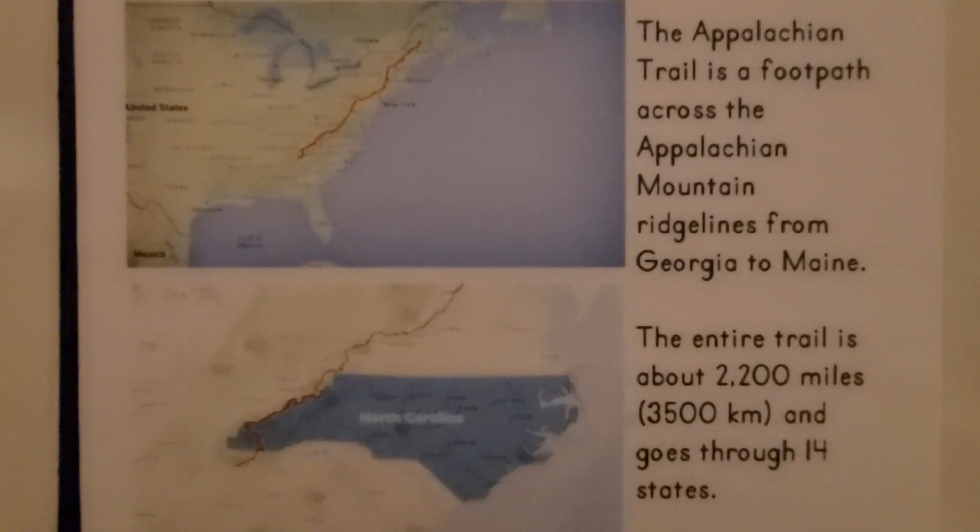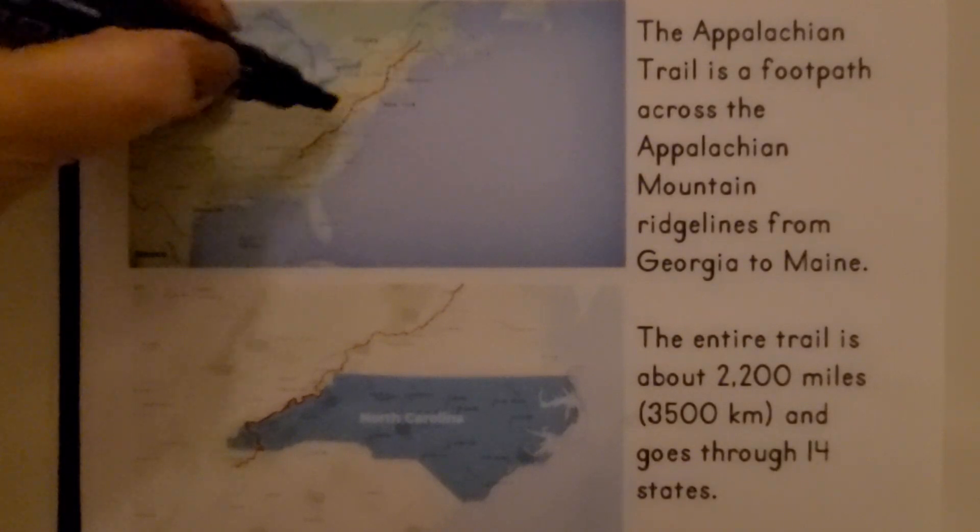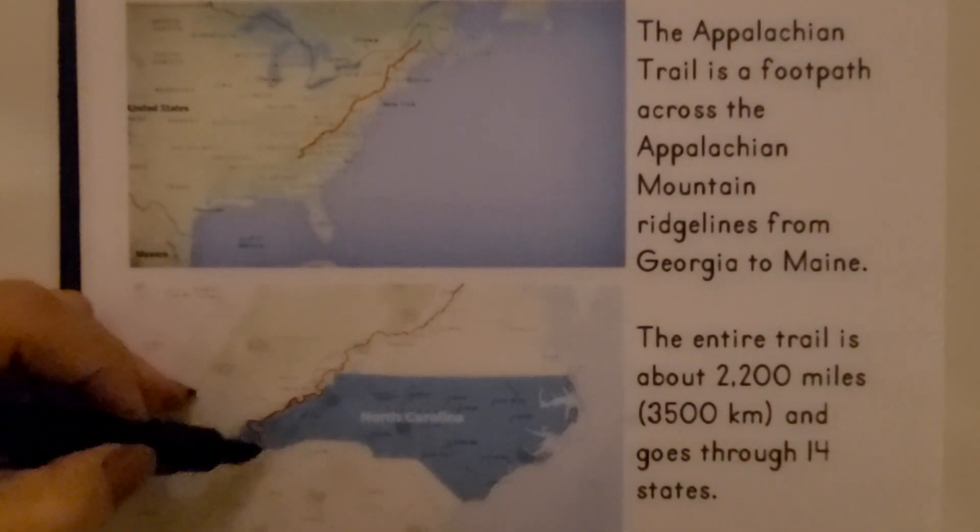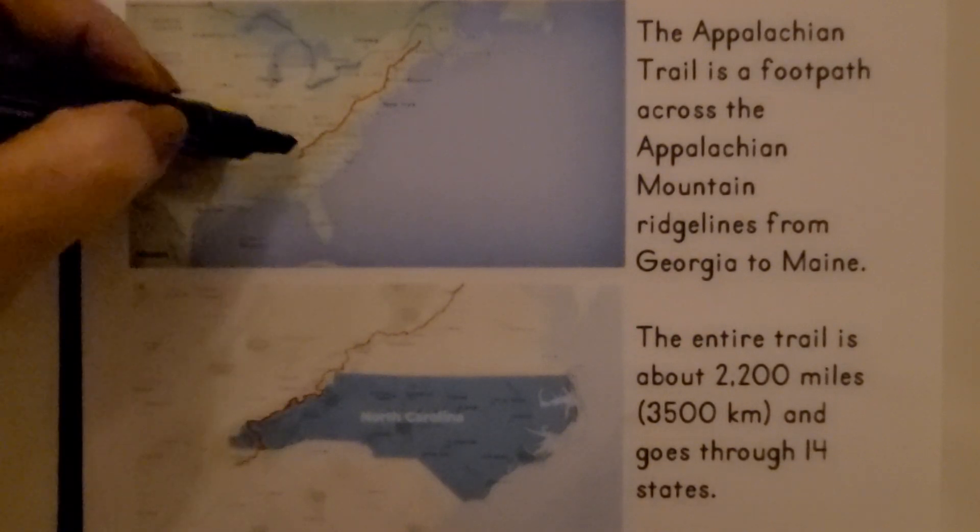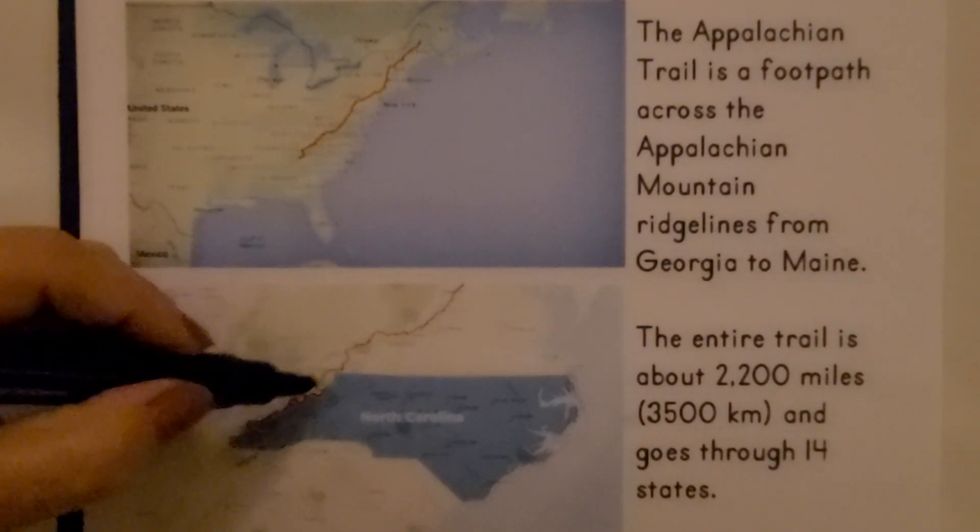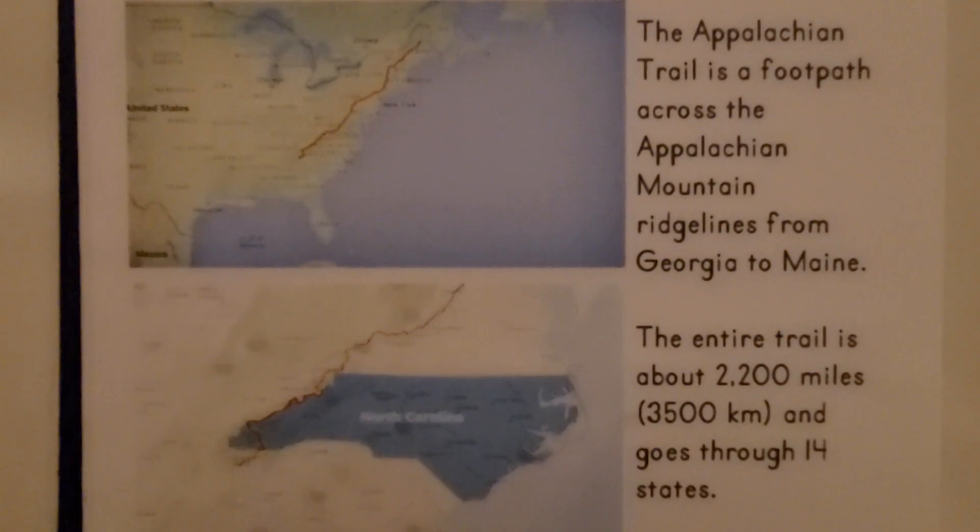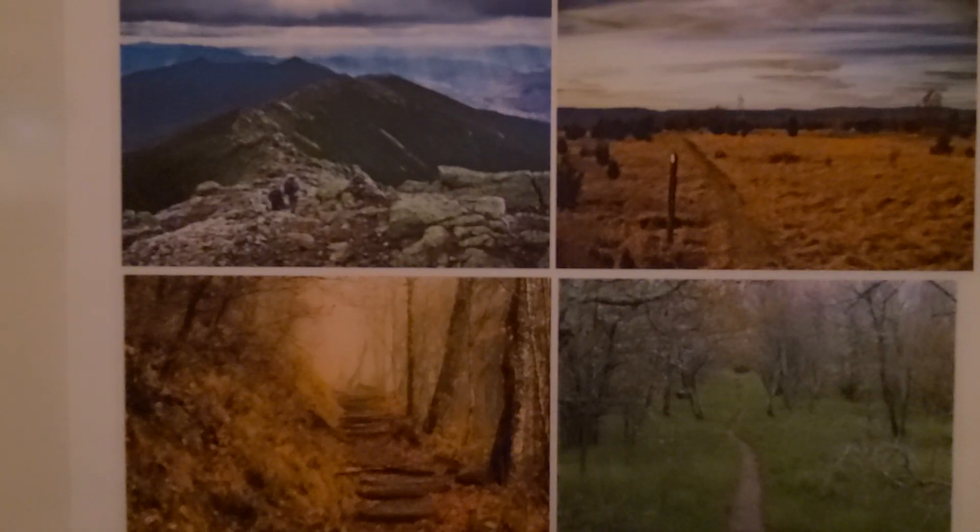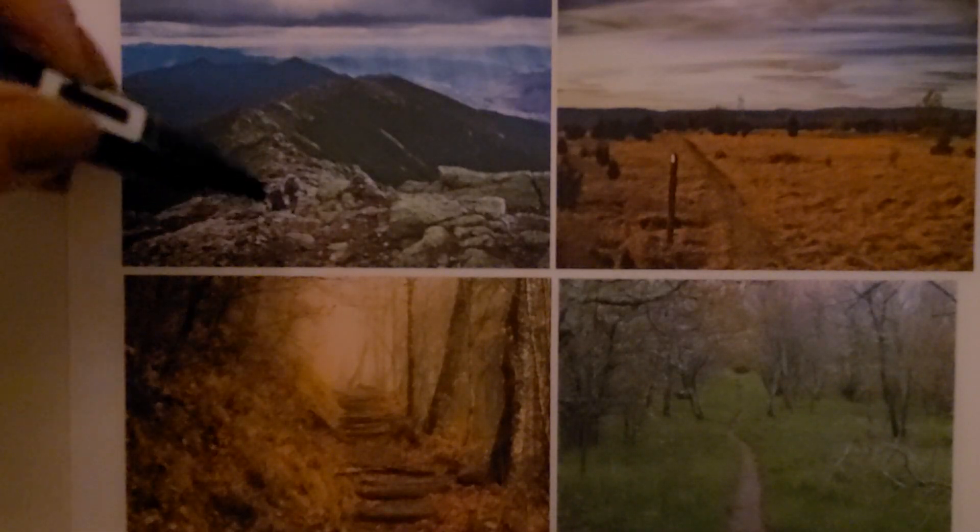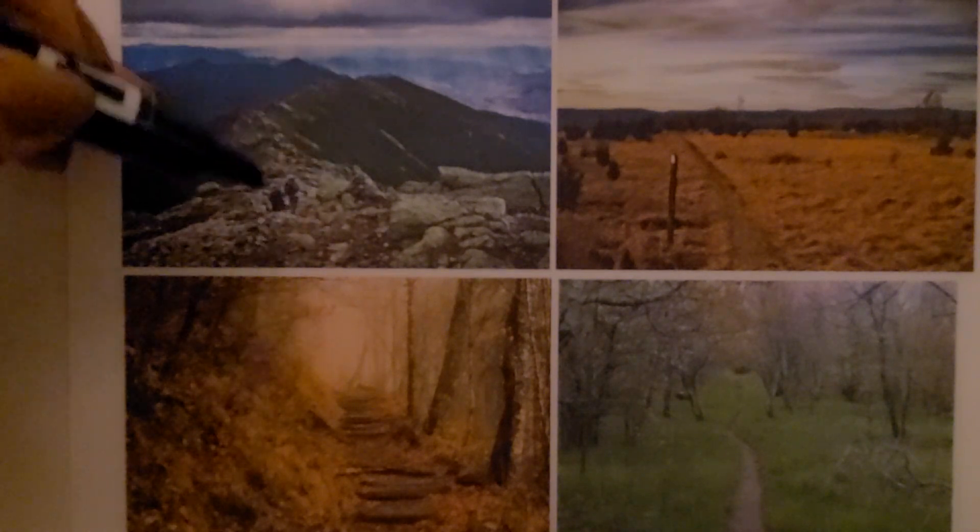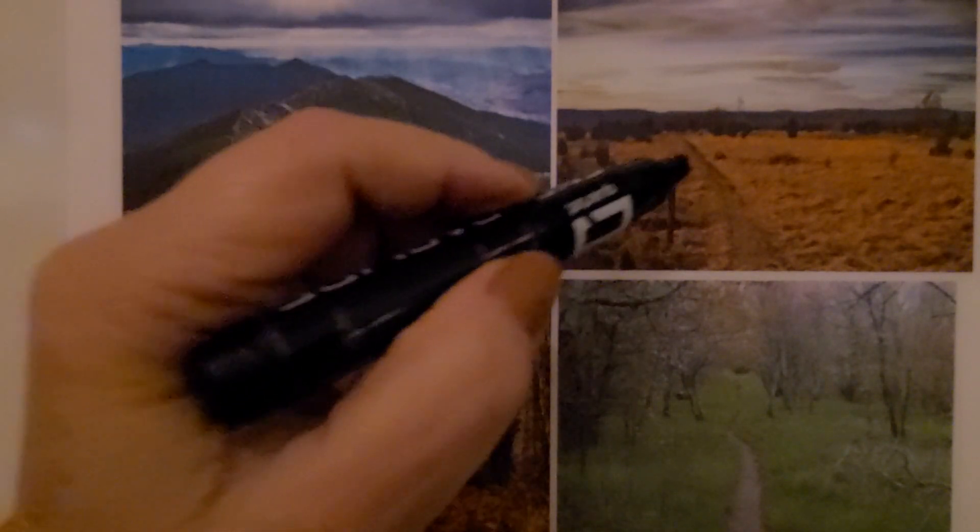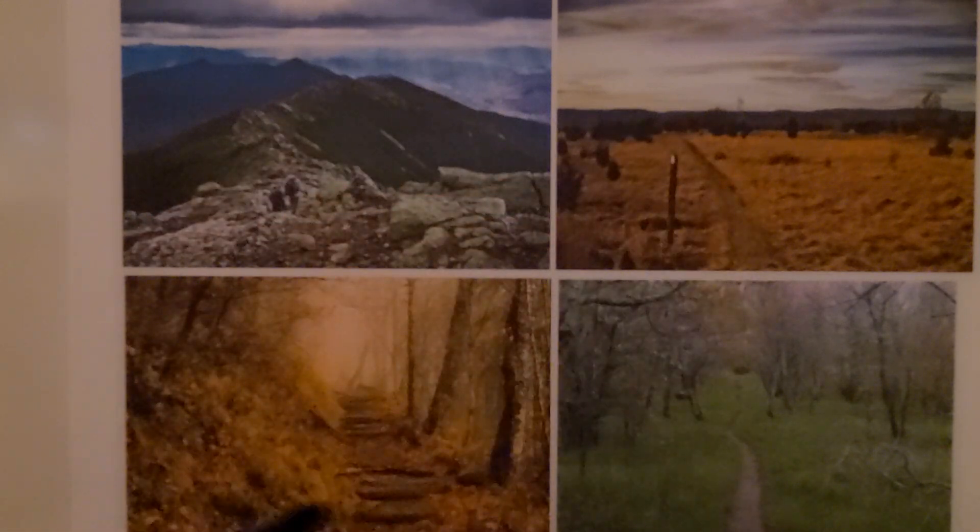The entire trail is about 2,200 miles. That would be 3,500 kilometers. And it goes through 14 states in the United States. We're going to be talking about this section right here just for a little part of the trail in North Carolina. And the trail is actually quite beautiful. It goes along the top, the ridgeline of the Appalachian Mountains. And there's some areas that are more flat. You can see how pretty it would be to walk or hike that trail.